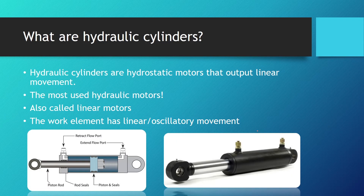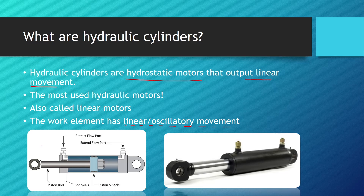Hydraulic cylinders are hydrostatic motors that output linear movement. They are the most used hydraulic motors, also called linear motors, because their work element — the piston rod and the piston — have a linear or oscillatory movement. They both extrude out of and retract back into the cylinder.